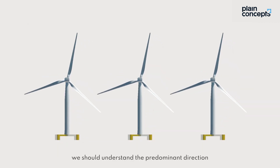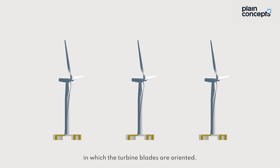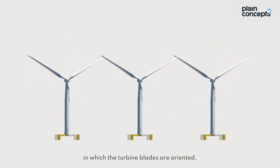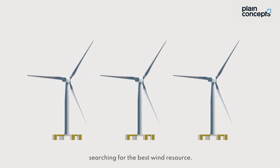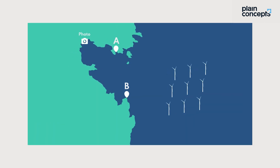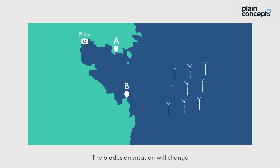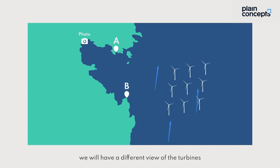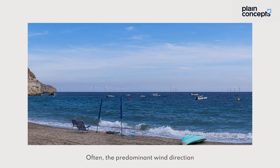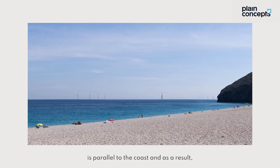Last step: we should understand the predominant direction in which the turbine blades are oriented. The nacelle of a wind turbine rotates searching for the best wind resource. For this, we use the wind rose for each site. The blade's orientation will change according to the wind direction and thus, we will have a different view of the turbines from where we took the original panoramic photos. Often, the predominant wind direction is parallel to the coast and as a result, we would observe a profile of a turbine rather than have it face the coastline.